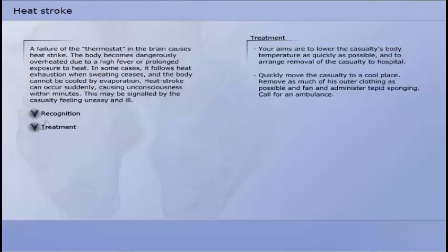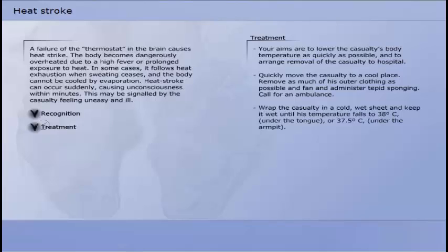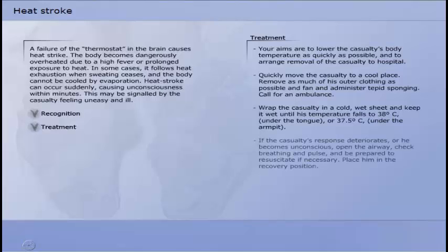In order to treat heat strike your aims are to lower the casualty's body temperature as quickly as possible and to arrange removal of the casualty to hospital. Quickly move the casualty to a cool place. Remove as much of his outer clothing as possible and fan and administer tepid sponging. Call for an ambulance. Wrap the casualty in a cold wet sheet and keep it wet until his temperature falls to 38 degrees Celsius under the tongue or 37.5 degrees Celsius under the armpit. If the casualty's response deteriorates or he becomes unconscious,